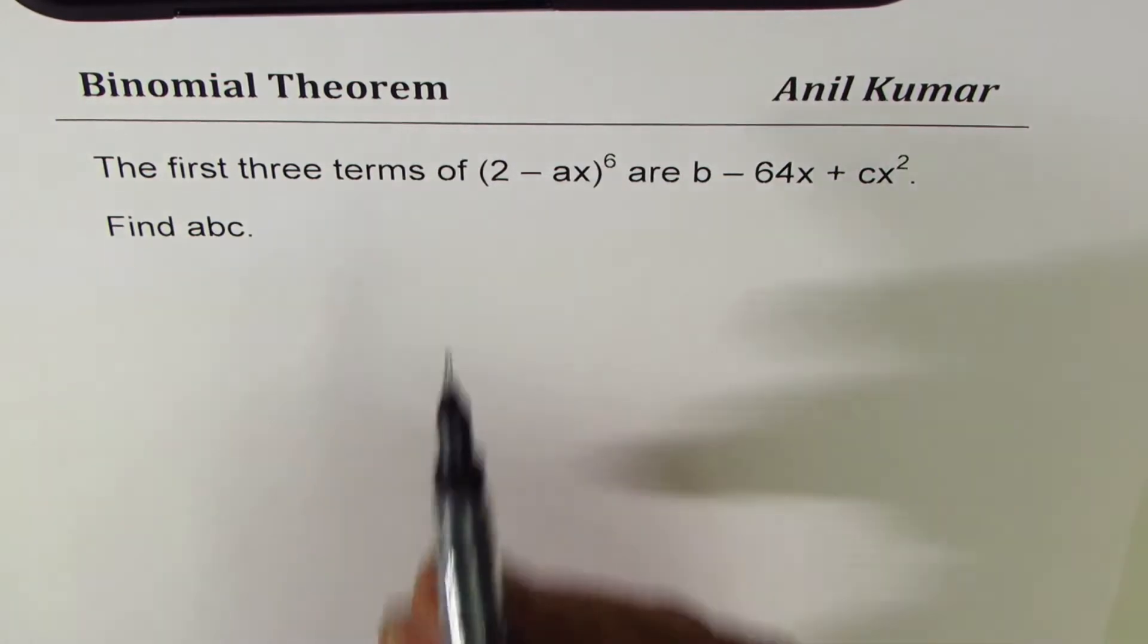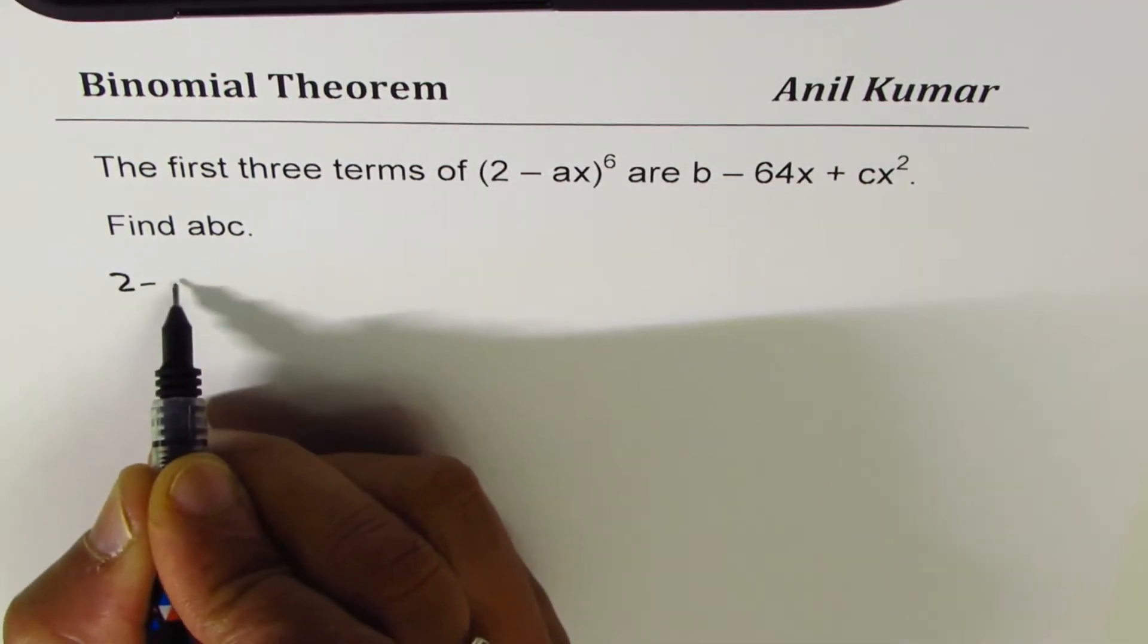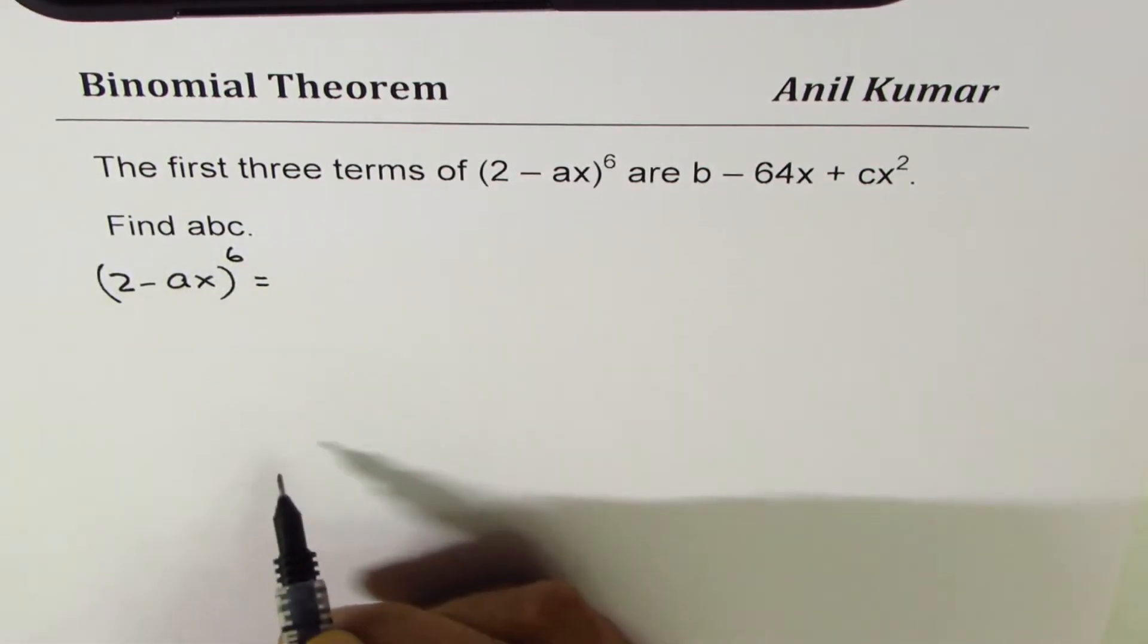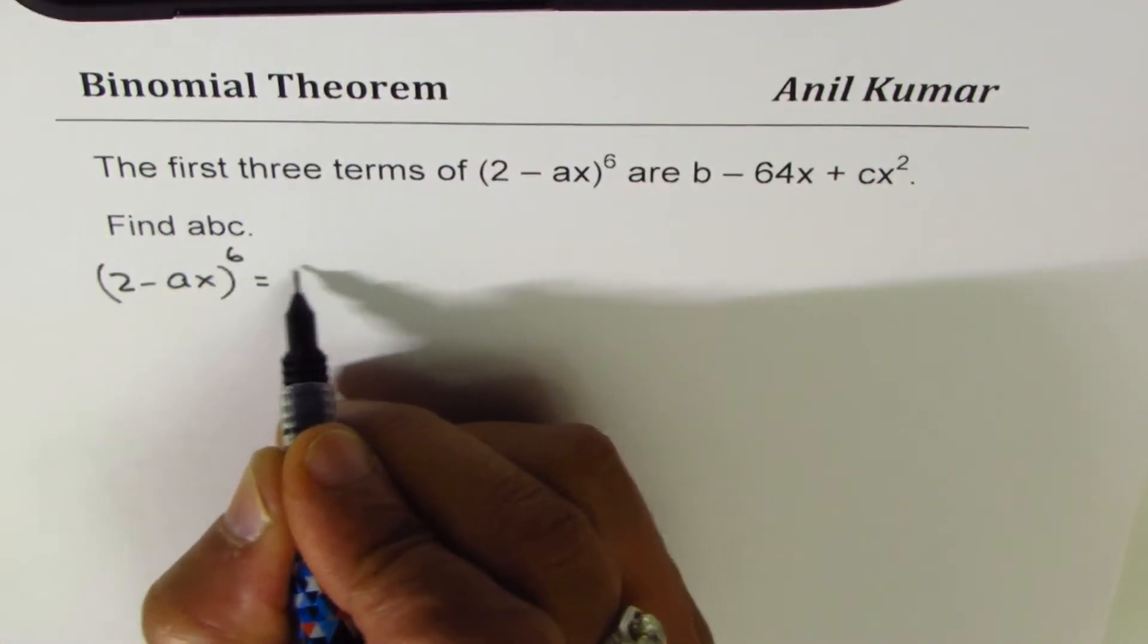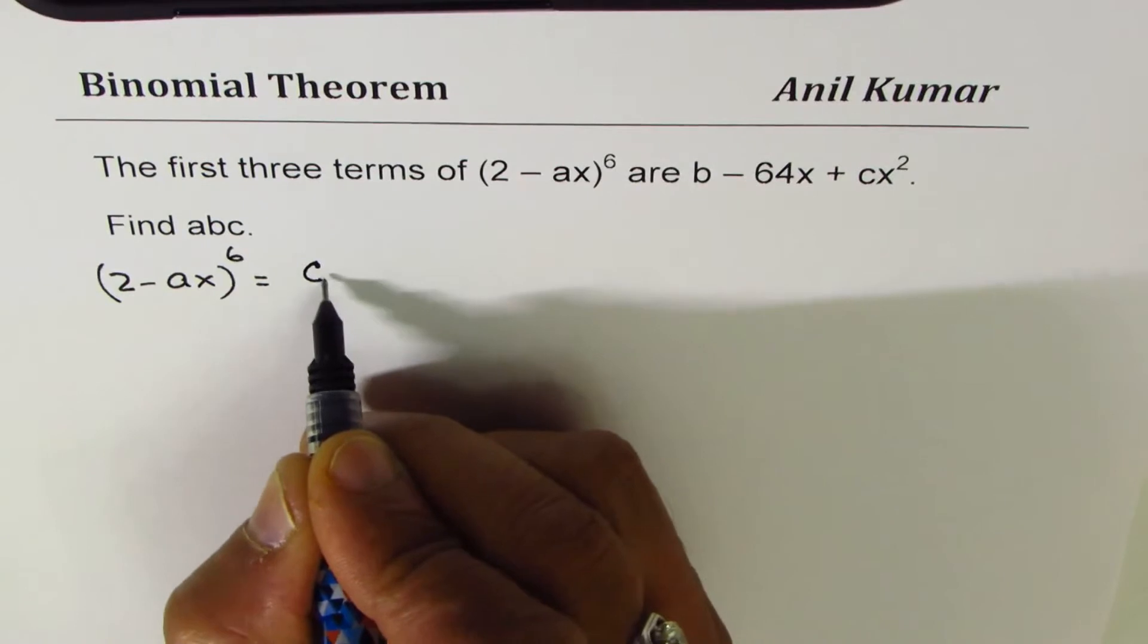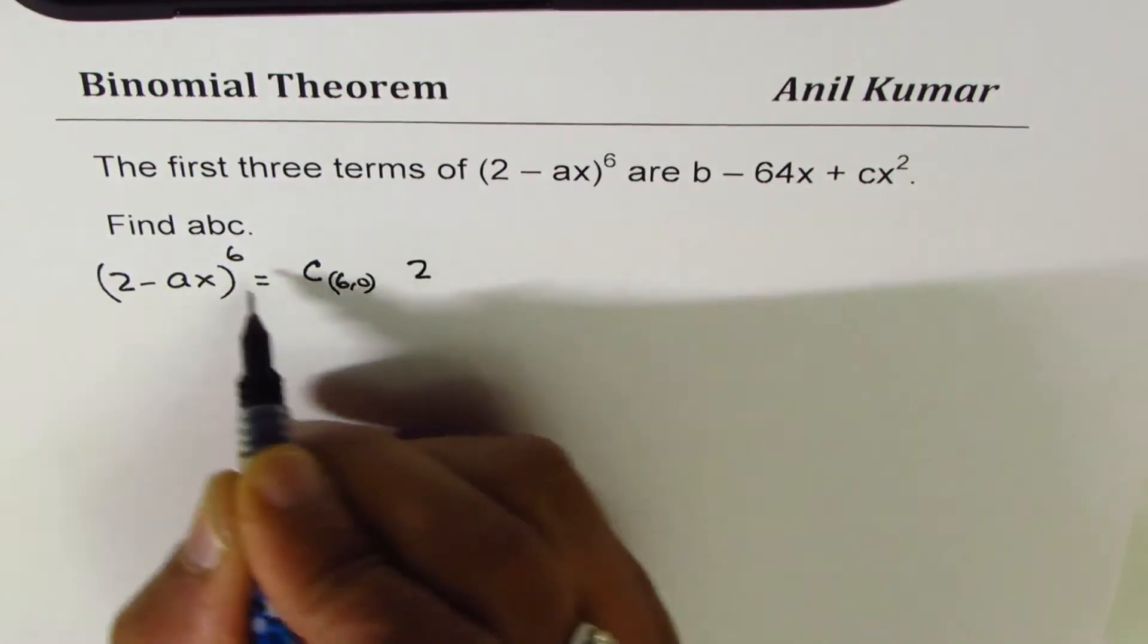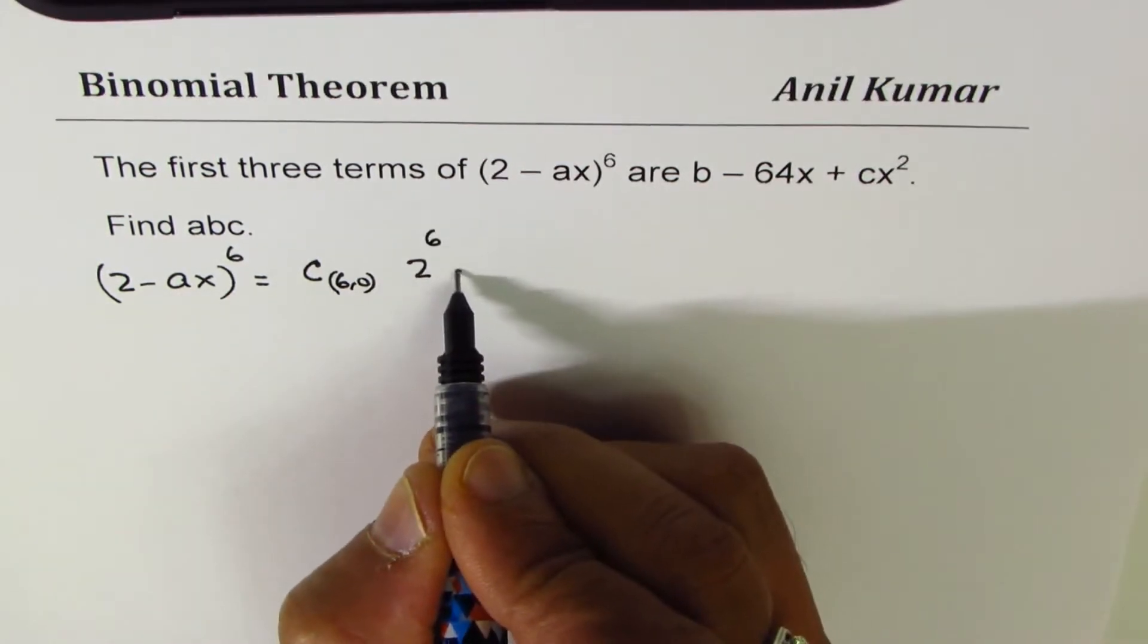You can always pause the video, answer the question, and then look into my suggestions. So let's first expand (2 - ax)^6 using binomial theorem. We'll just go first three terms.